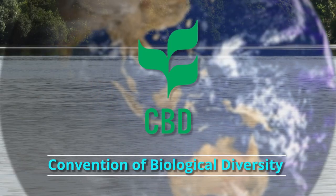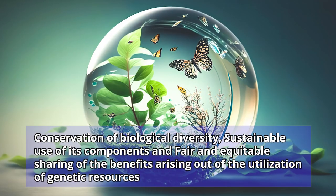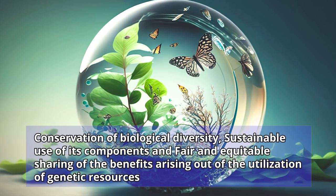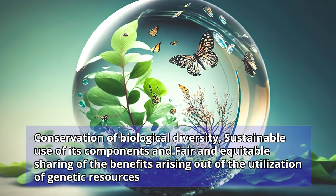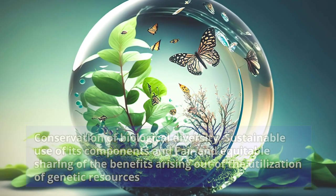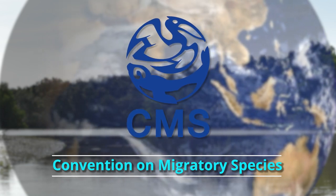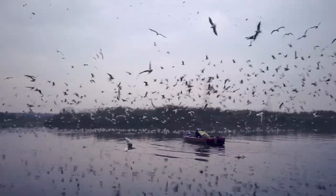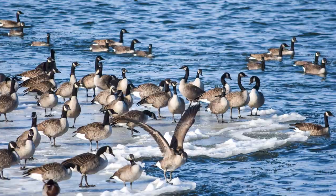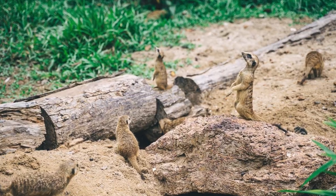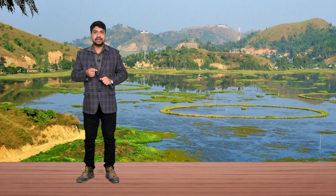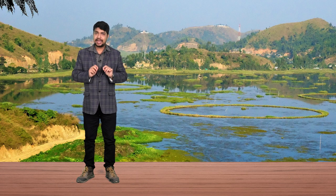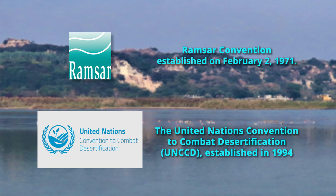These include the Convention on Biological Diversity, which aims at the conservation of biological diversity, the sustainable use of its components, and the fair and equitable sharing of benefits arising out of the utilisation of genetic resources. The second is the Convention on Migratory Species, which provides a global platform for the conservation and sustainable use of terrestrial, aquatic, and avian migratory animals and their habitats. The third is the United Nations Sustainable Development Goals, which works to ensure conservation and sustainability of various life forms and their habitats.